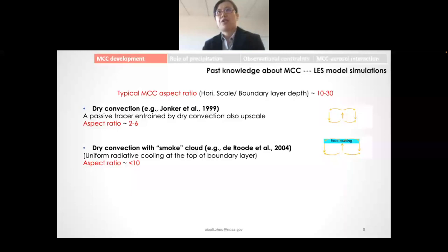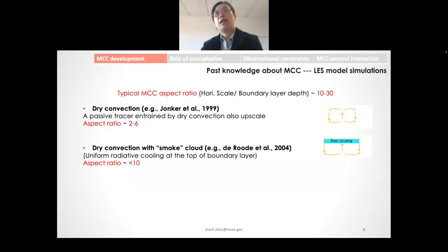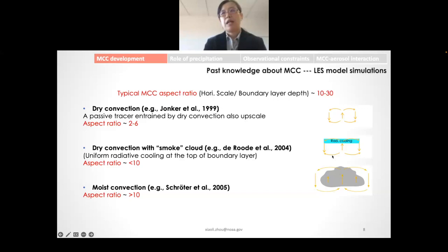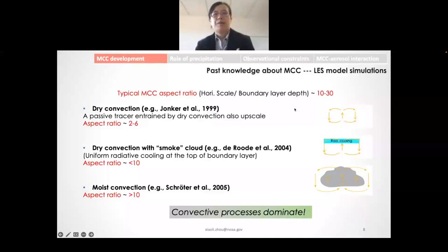LES modeling studies have been really helpful for identifying critical influences on mesoscale cellular convection. For example, the typical aspect ratio in nature is about 10 to 30, but in dry convection simulations it's only 2 to 6. However, by adding an artificial layer of radiative cooling at the top of the boundary layer, the scale of the circulation increases significantly. Schroed et al. examined moist convection and found the scale increased even larger, close to what is observed. Clearly, cloud-top radiative cooling and latent heating play very important roles in MCC development.